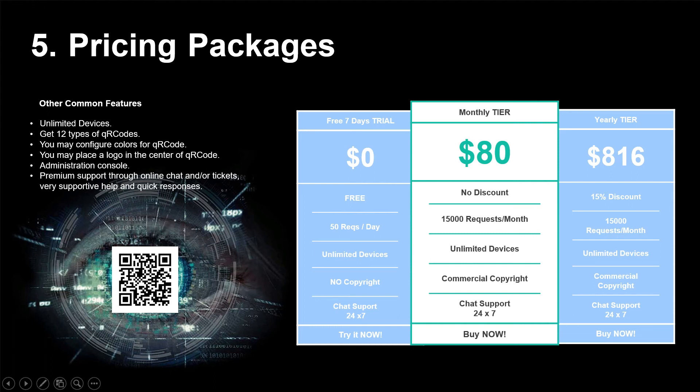For your 7-day free trial you have 50 daily requests, no commercial copyright. For monthly and yearly tiers you have 15,000 requests monthly with commercial copyright. The monthly tier is $80 USD and the yearly tier is $816 USD with a 15% discount included.